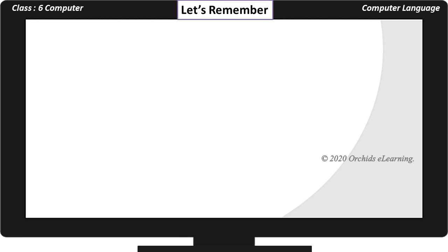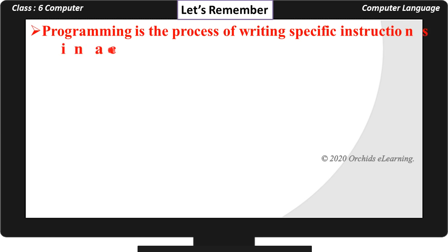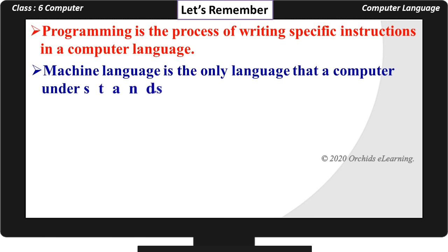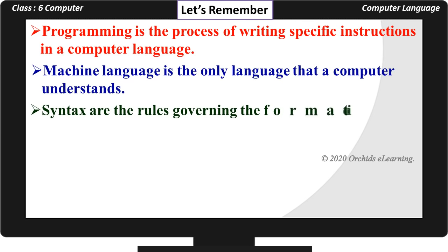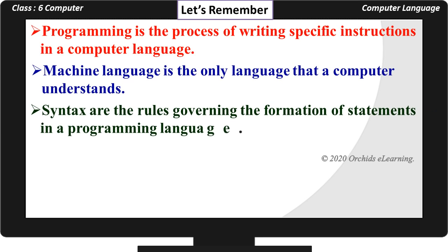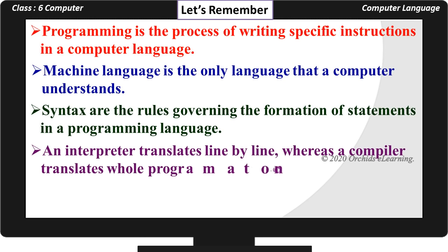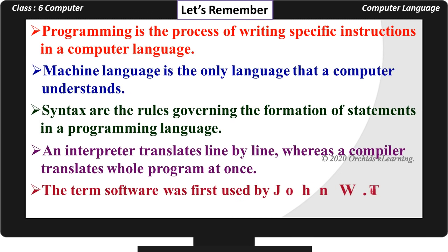Let's remember: Programming is the process of writing specific instructions in a computer language. Machine Language is the only language that a computer understands. Syntax are the rules governing the formation of statements in a programming language. An interpreter translates line by line, whereas a compiler translates the whole program at once. The term software was first used by John W. Tukey in 1957.